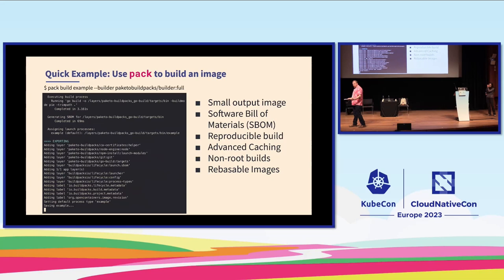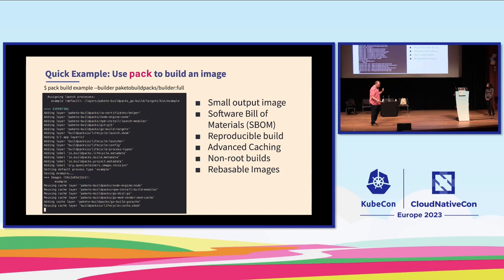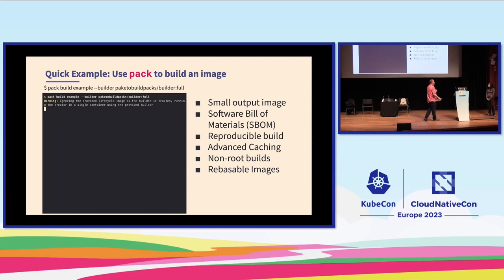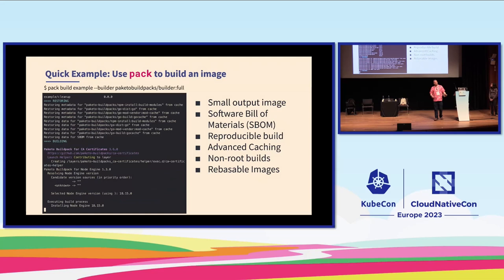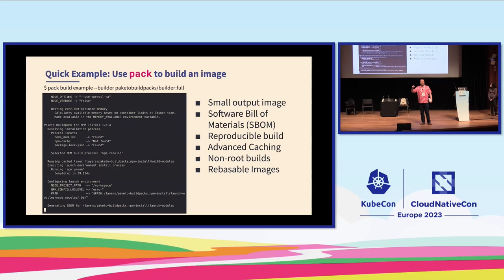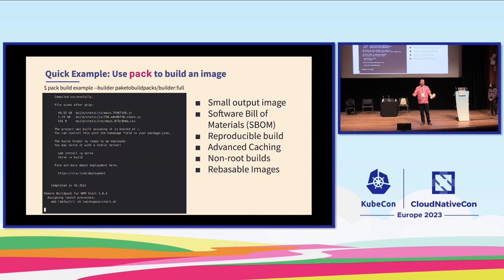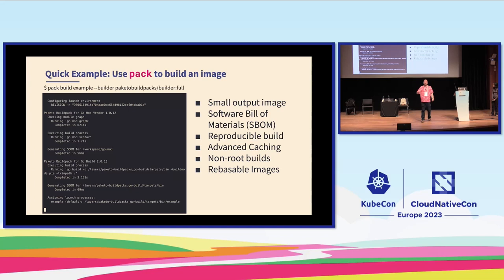Byte-for-byte reproducibility is particularly interesting for experimental workflows — whether in science, data science, or regulated industries. It also enables advanced caching strategies: if you build an image layer containing only your application dependencies, and those dependencies don't change, we can reuse that layer when you rebuild. So your application source code might change, but that layer doesn't necessarily need to change.